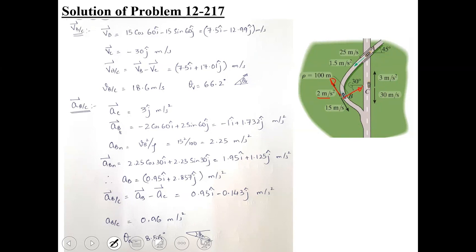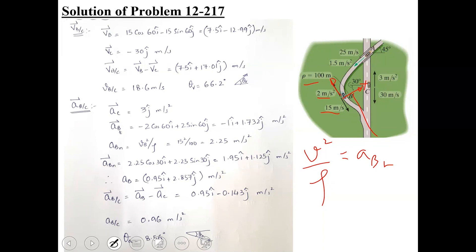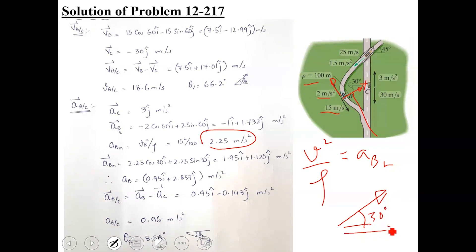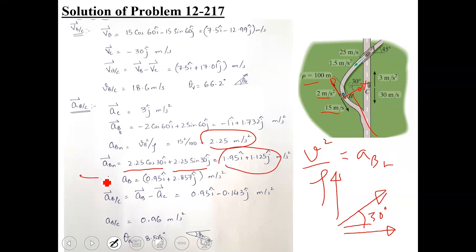The normal component is always directed toward the center of curvature. Its magnitude is v squared over rho — v is 15 meters per second and rho is 100 meters, so 15 squared over 100 gives 2.25 meters per second squared. This vector is at 30 degrees in the first quadrant, giving positive x and y components. So aB equals aB_tangential plus aB_normal.